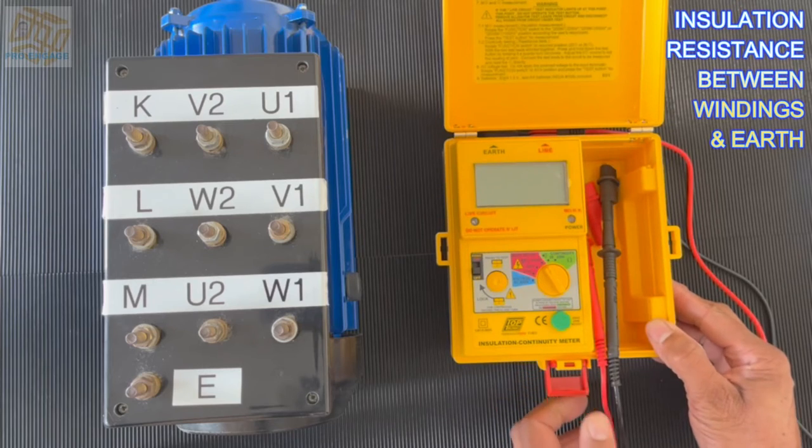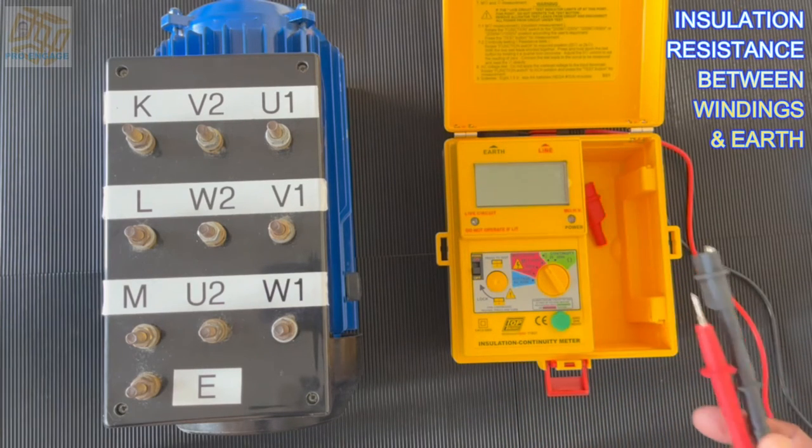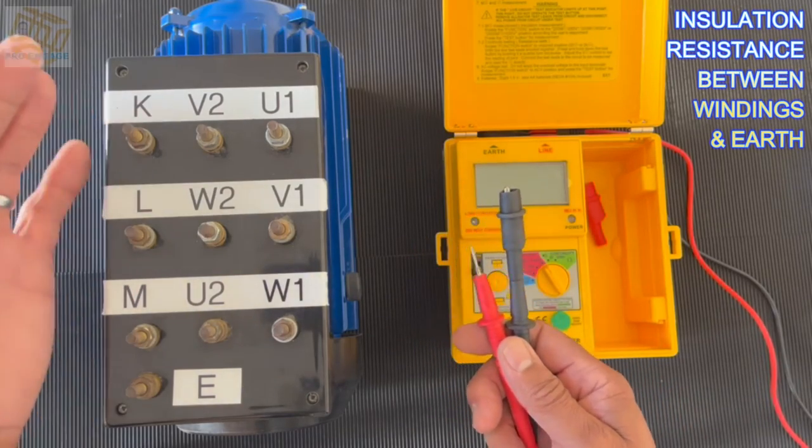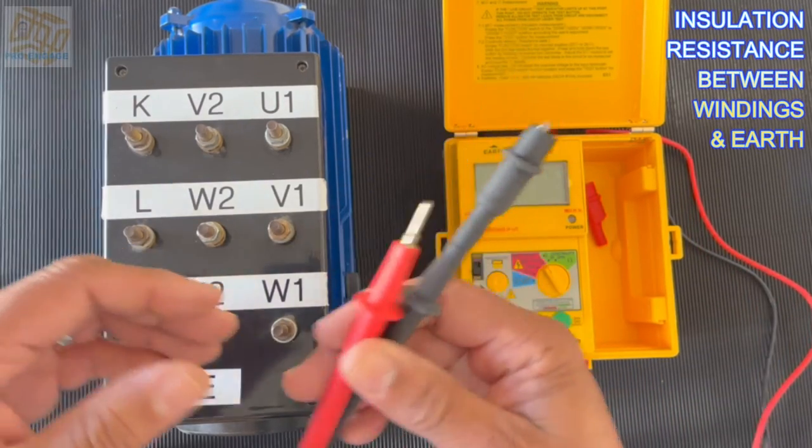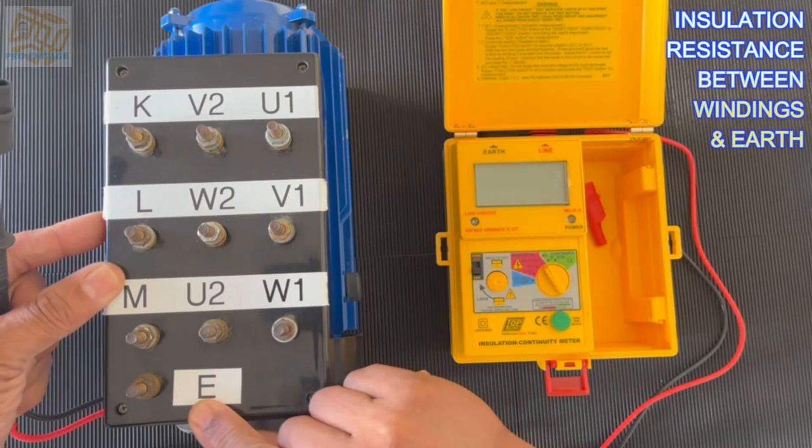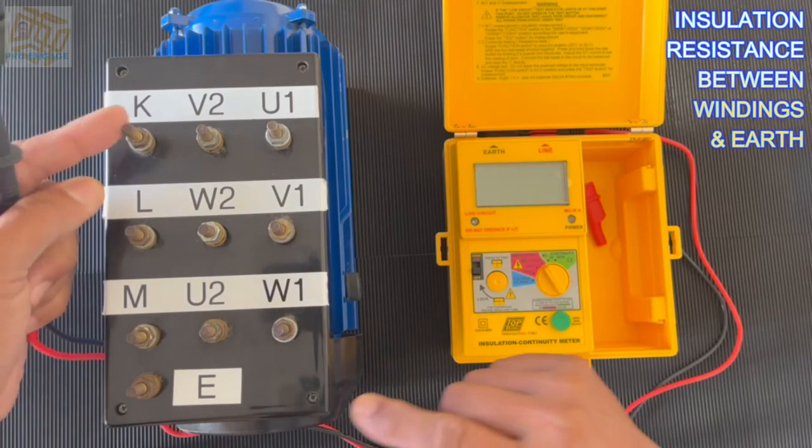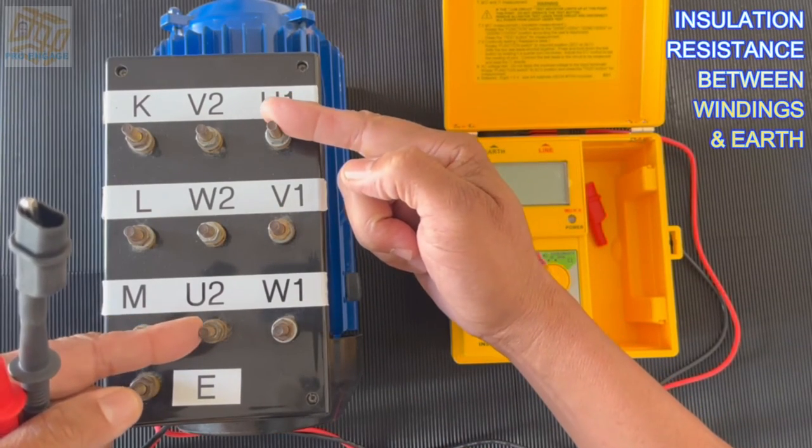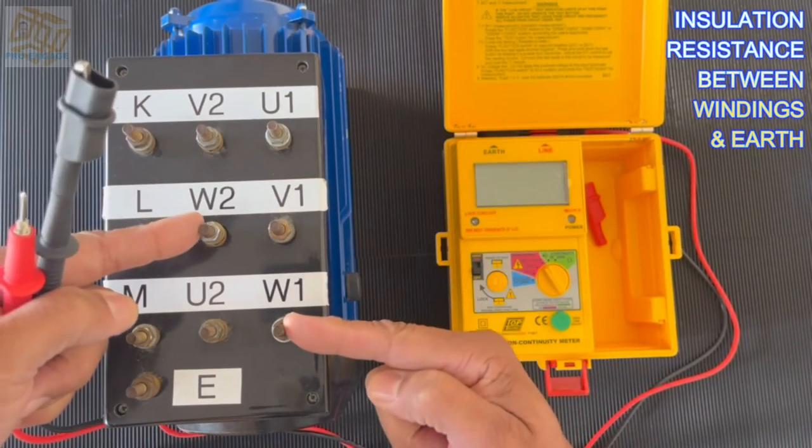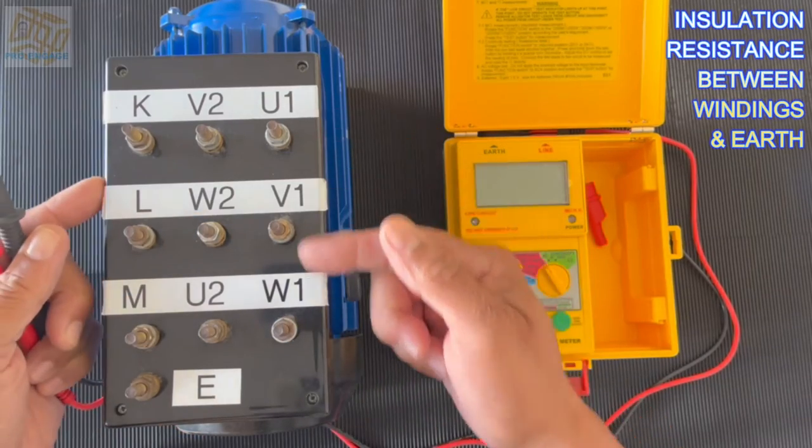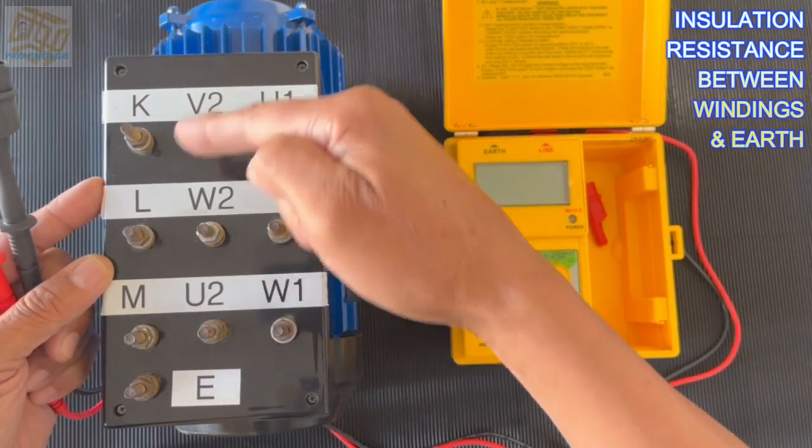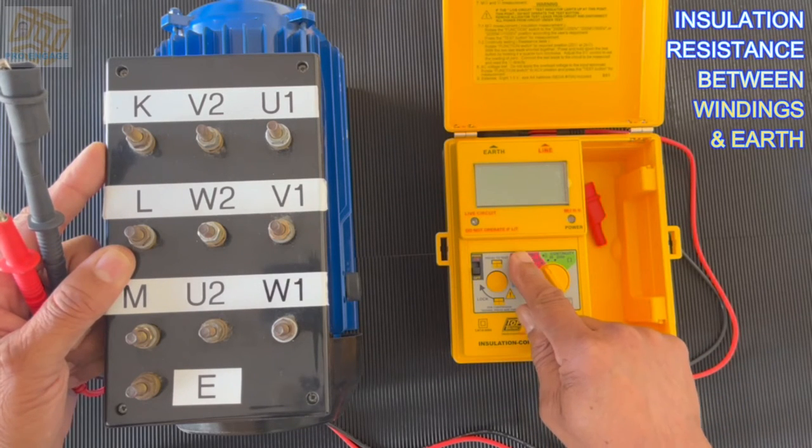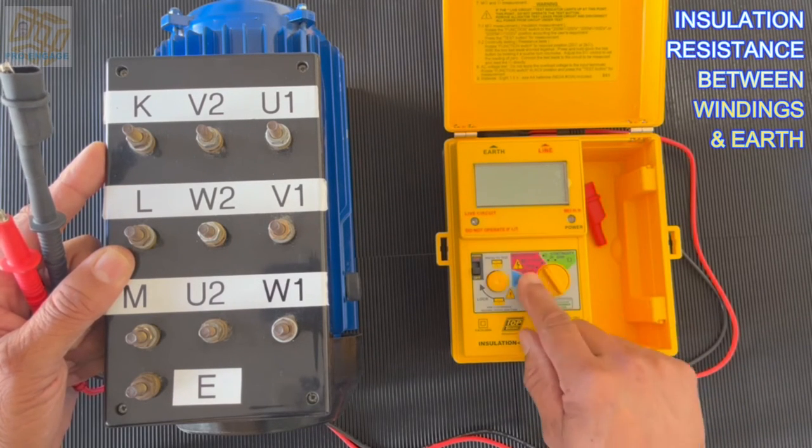And just for interest sake, we want to just have a look at the digital tester to see if it does the exact same thing. And so we will do the same test again. Same motor, we want to do earth to all the windings. We've identified the windings as per our continuity of windings test. We know where our windings are and we're not going to do the center. We will do only the far left and the far right.